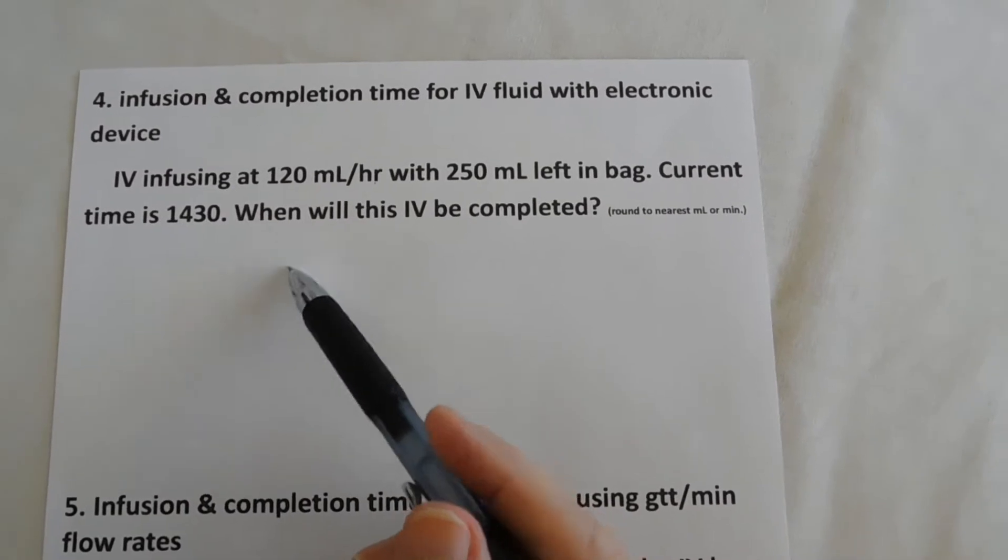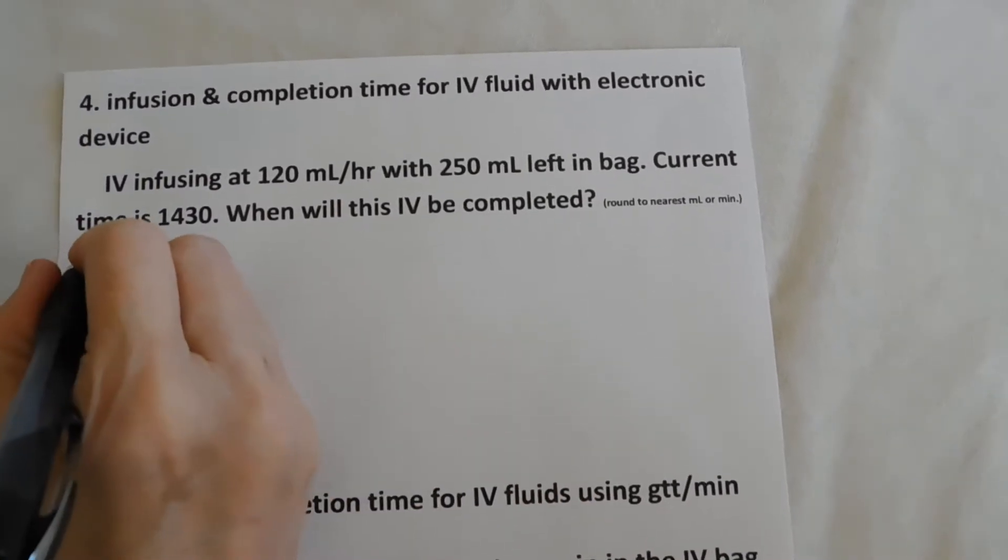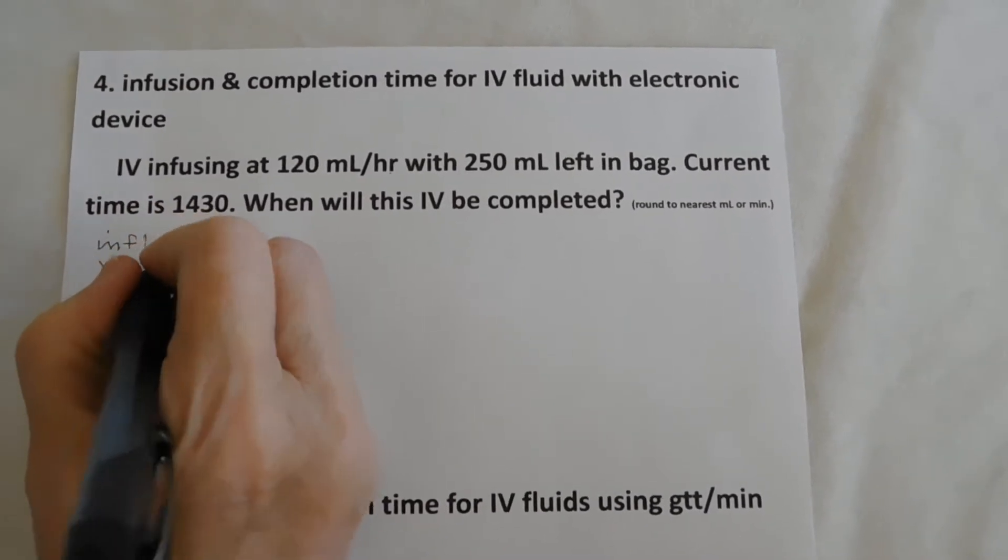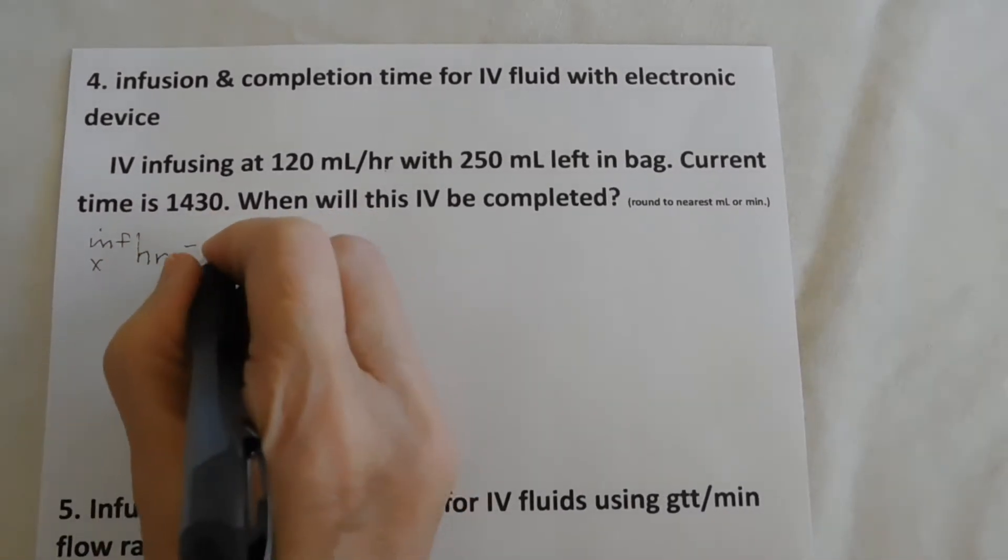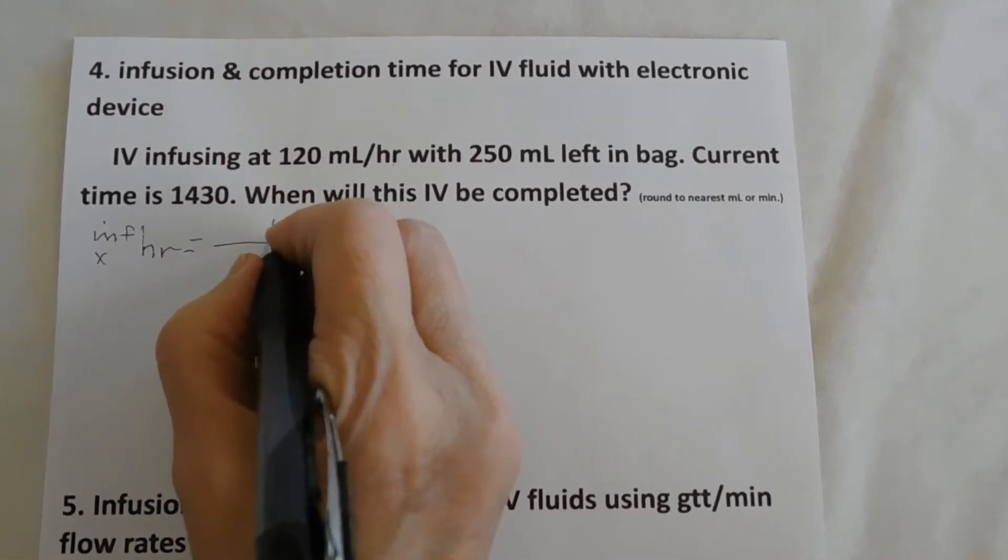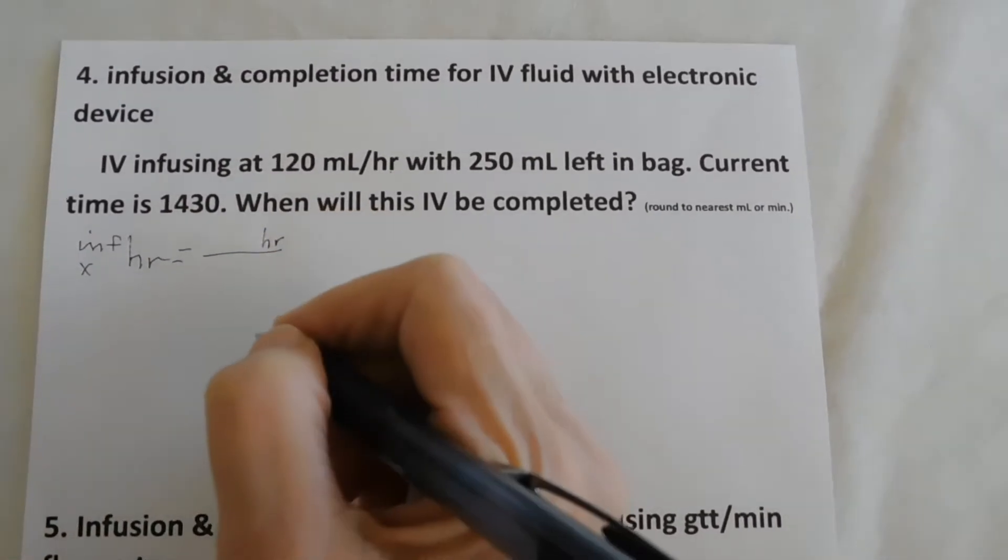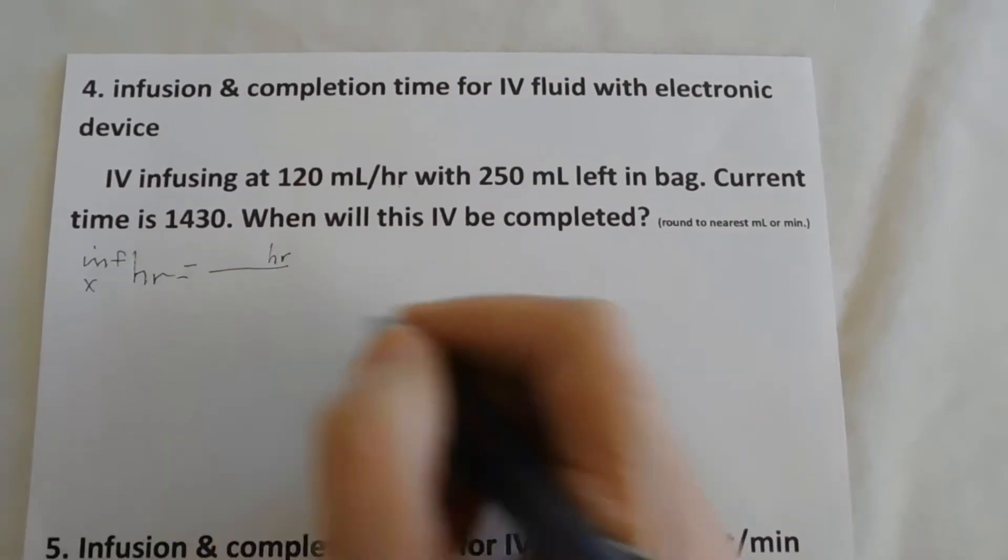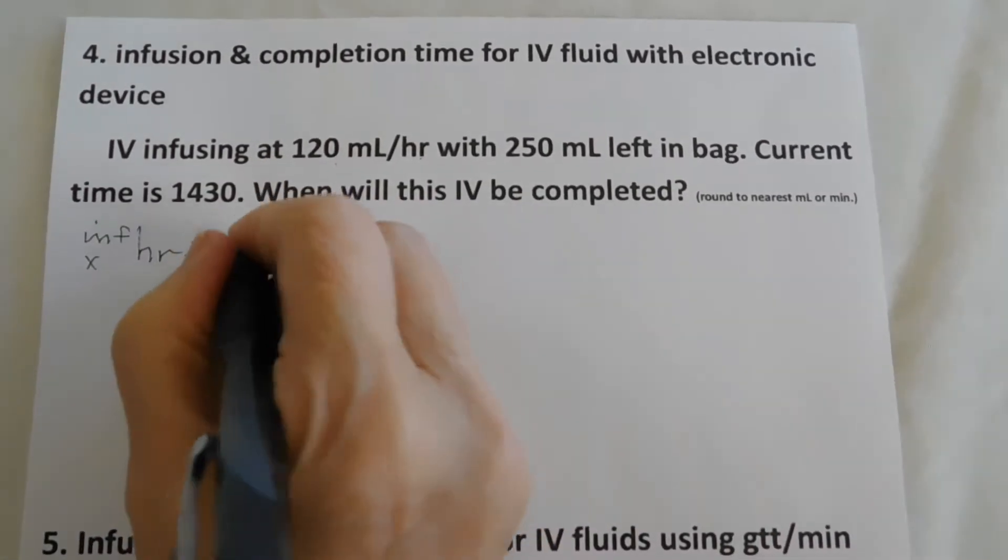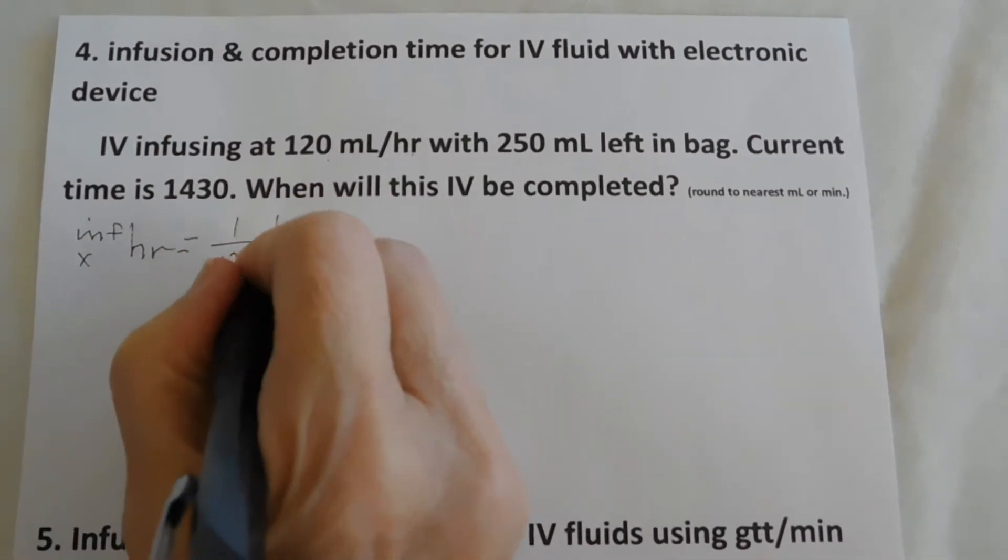So we'll start out with infusion time. Infusion time in hours. So hours equals, and we know that hours will have to be in the numerator. So what do we have with hours? Well, we have one hour is 120 mils. So one hour is 120 mils.